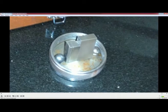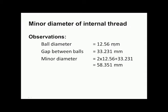The minor diameter is calculated by adding the diameter of both steel balls to the gap between them. Ball diameter is 12.56 mm and gap between balls is 33.231 mm. Minor diameter = 2 × 12.56 + 33.231 = 58.351 mm. This is the minor diameter of the internal thread.